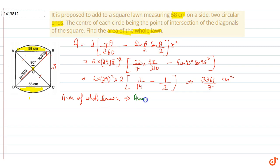Area of square. If we add this area to the two segments, capital A, then we will have to do it. Area of square is 58 into 58. Side of square. Plus.